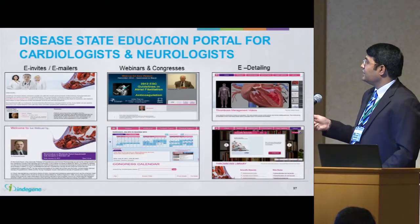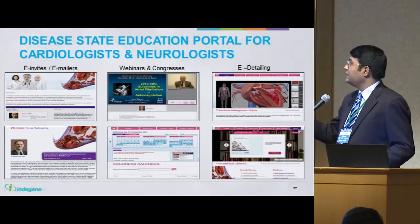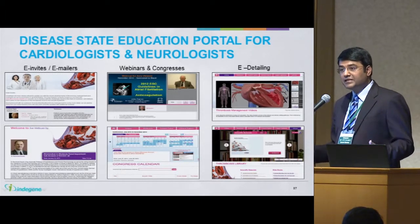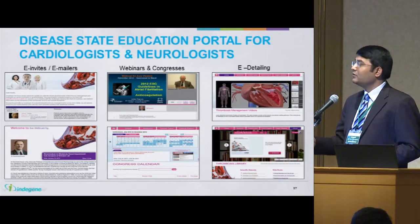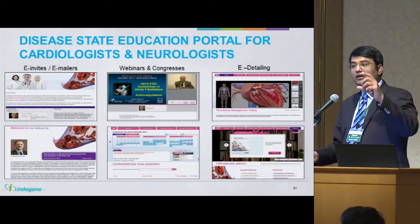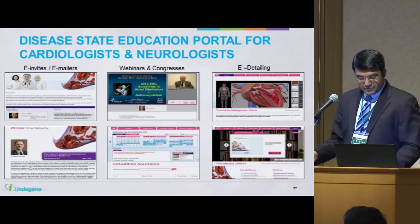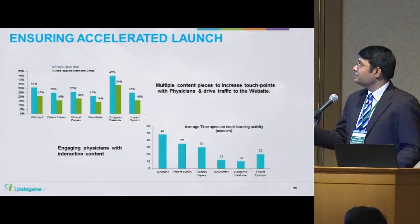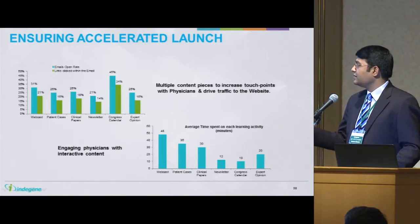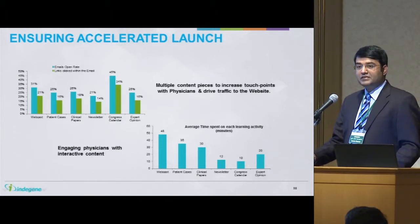These are some of the snapshots. There was an e-detailing component because it was a new product — mechanism of action videos were put in, KOL videos were put in, webinars, e-invites, and e-mailers. In fact, from the e-mailers, the KOL videos were embedded in them. Some of the statistics from the same program show the average time spent on different content assets and the open rate for emails that were sent.